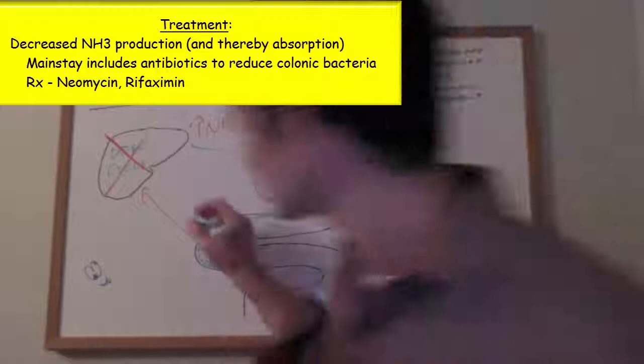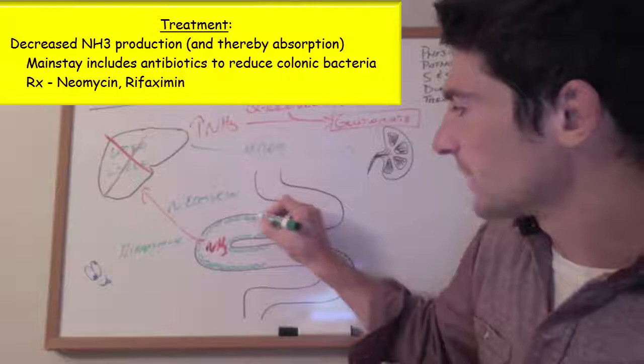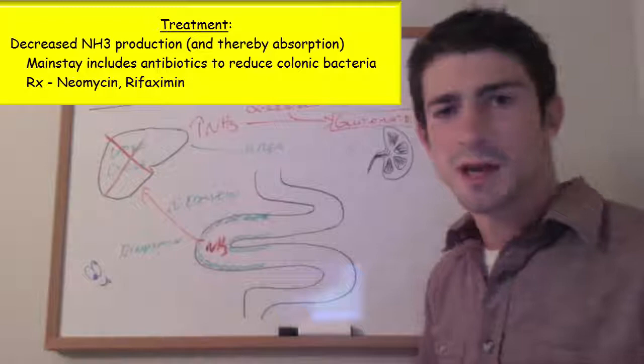Neomycin and rifaximin just kill these bacteria, decreasing ammonia production, thereby decreasing absorption and increasing excretion of protein.